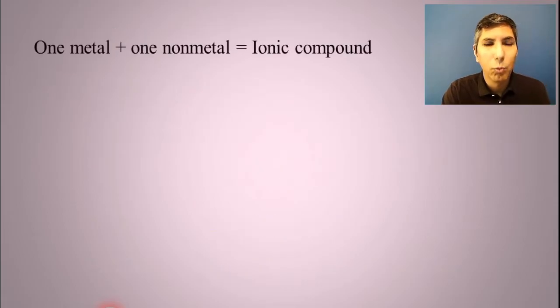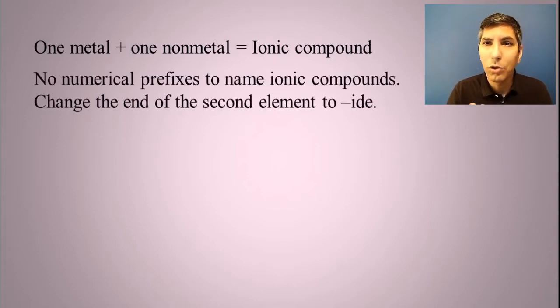If we have one metal and one nonmetal, that would be one element from the left side of the table and one element from the right side of the table. That would be an ionic compound. Now for ionic compounds, we don't use numerical prefixes. So don't use mono and di and tri and all that. Just name the first element...